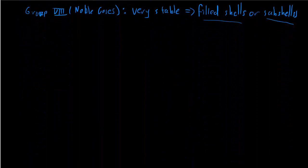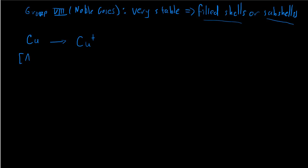Now let's look at another example — a transition metal. We're going to look at copper, which is interesting because it's one of the exceptions to our electron configuration rules. We want to form a copper one ion. Writing the electron configuration in shorthand notation, our previous noble gas to copper is argon. We might think it would be 4s2, 3d9, but we've learned that's not the electron configuration because there's an exception for copper. It's actually argon, 4s1, 3d10. Filling this 3d subshell — filled subshells are particularly stable.